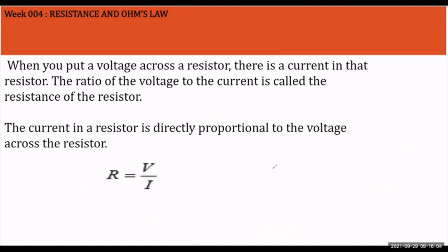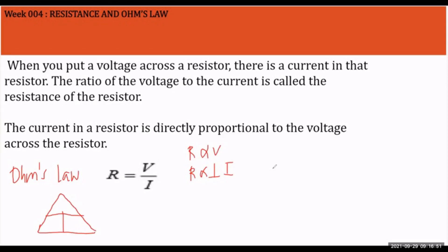When you put a voltage across a resistor, there is a current in that resistor. The ratio of the voltage to the current is called the resistance of the resistor. When deriving Ohm's Law, there is a direct proportionality between resistance and voltage, and an inverse proportionality between resistance and current. We can derive: R = V/I, I = V/R, and V = IR.